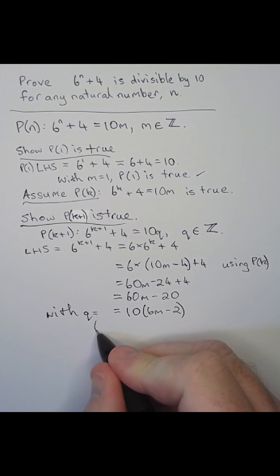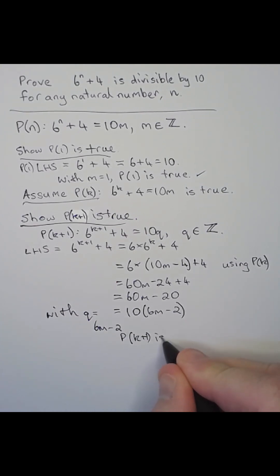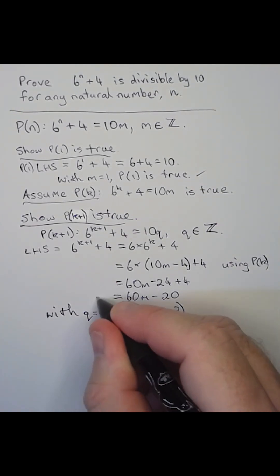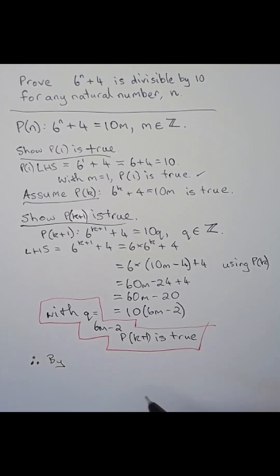So 6 to the k plus 1 plus 4 is also divisible by 10, assuming that 6 to the k plus 4 is divisible by 10. So by the principle of mathematical induction, 6 to the n plus 4 is divisible by 10 for any natural number n.